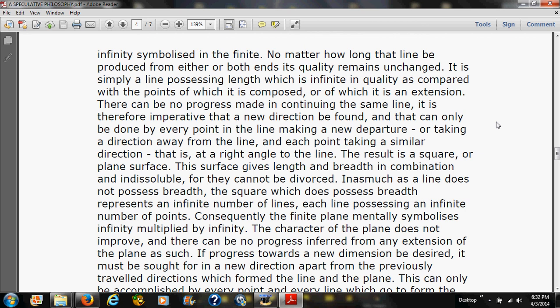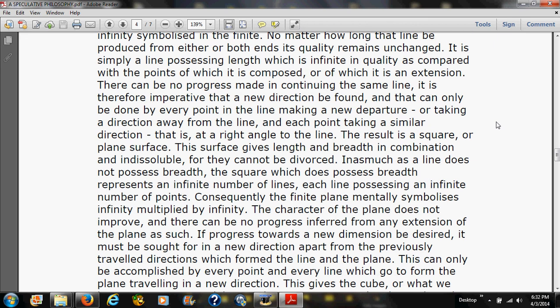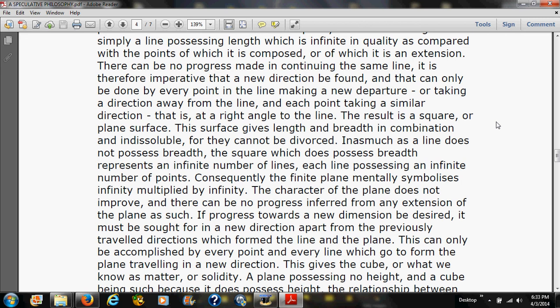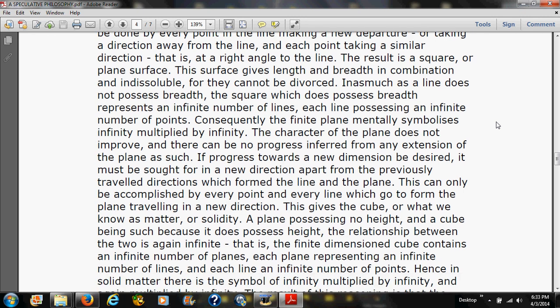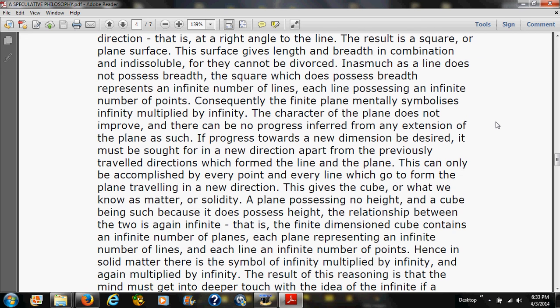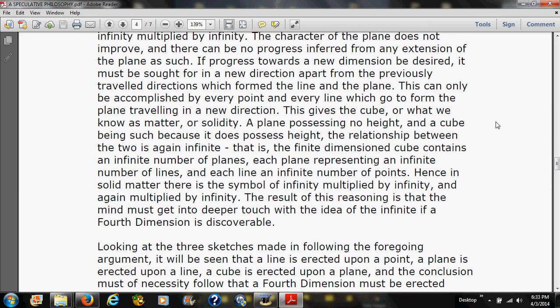The character of the plane does not improve, and there can be no progress inferred from any extension of the plane as such. If progress towards a new dimension be desired, it must be sought for in a new direction, apart from the previously traveled directions which form the line and the plane. This can only be accomplished by every point in every line which go to the form of the plane traveling in a new direction. This gives the cube, or what we know as matter or solidity, a plane possessing no height. A cube being such because it does possess height, the relationship between the two is again infinite. That is, the finite dimensional cube contains an infinite number of planes, each plane representing an infinite number of lines, and each line an infinite number of points. Hence, in solid matter, there is the symbol of infinity multiplied by infinity, and again multiplied by infinity.